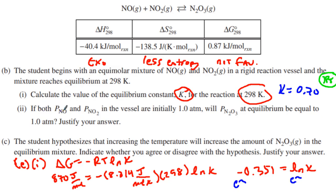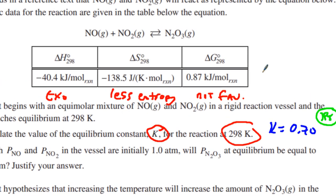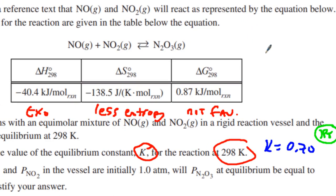Now they say if both the pressure of NO and NO2 are initially at 1 atmosphere, will the N2O3 be equal to 1 or less than 1? We have a little bit of an ICE problem going on. So NO plus NO2 is in equilibrium with N2O3. We start off with 1 atmosphere, 1 atmosphere, and 0.